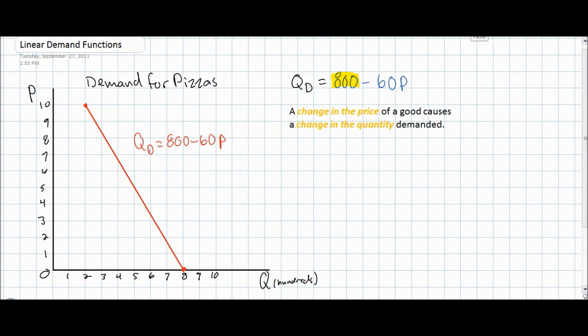As we saw in our previous video lecture, a change in the price of a good causes a change in the quantity demanded and thereby a movement along a demand curve.